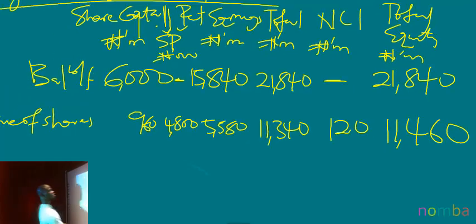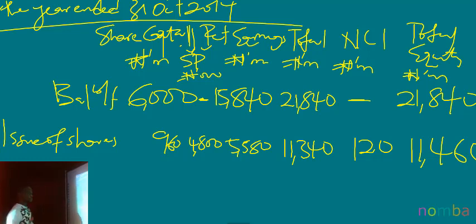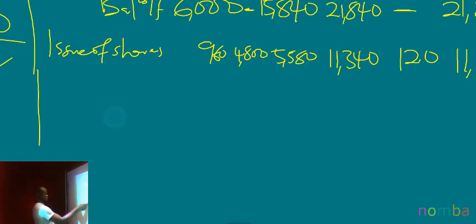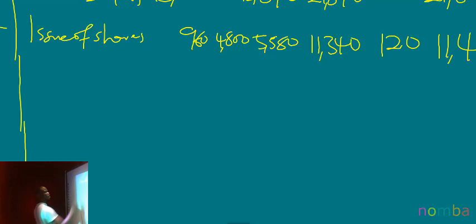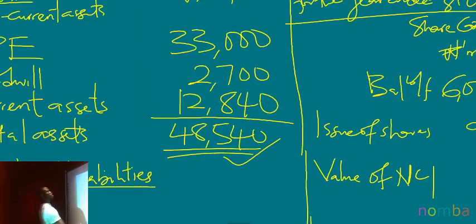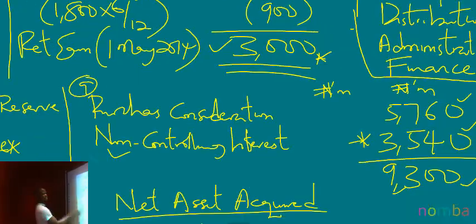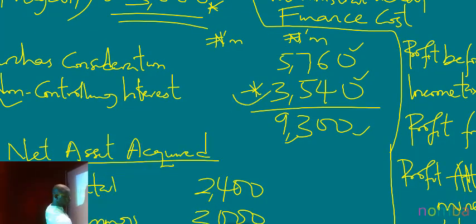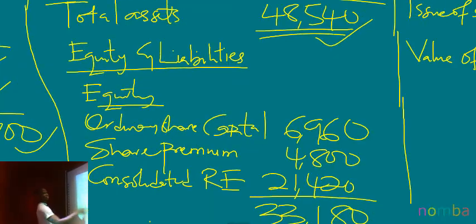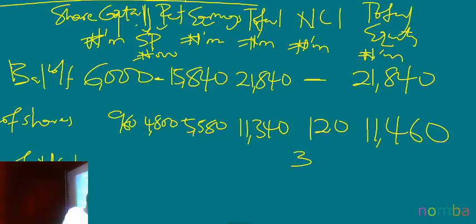Something most of you will forget is the value of NCI at acquisition — that is, the NCI at the beginning of the period, which we determined when ascertaining goodwill. From the question, the NCI figure at acquisition was 3,540. So I'll put 3,540 under the NCI column.